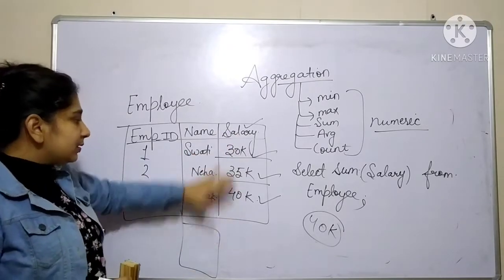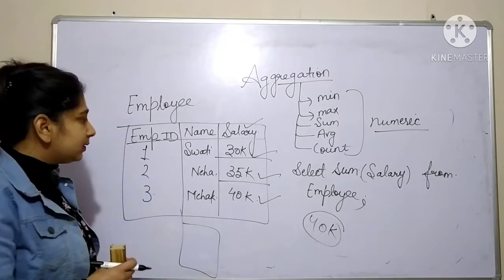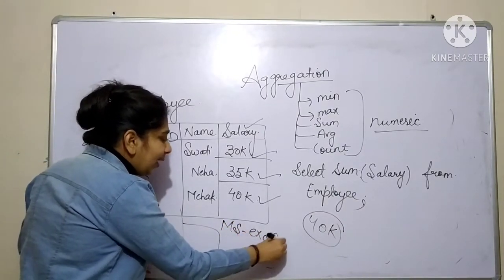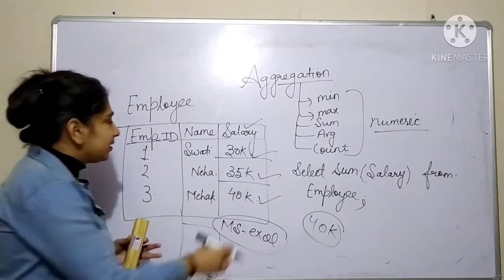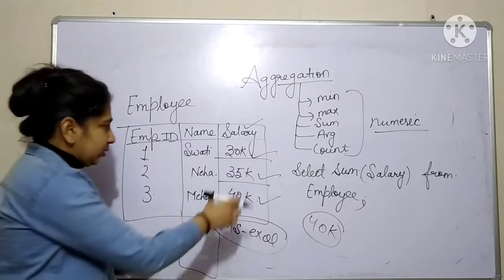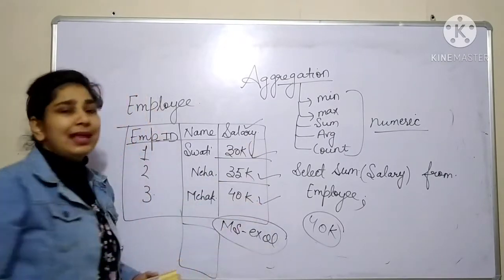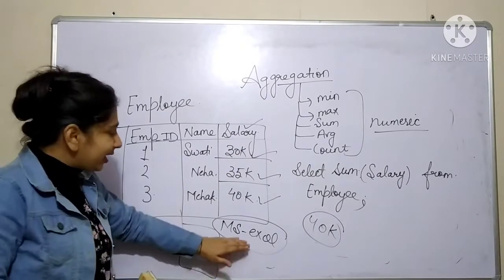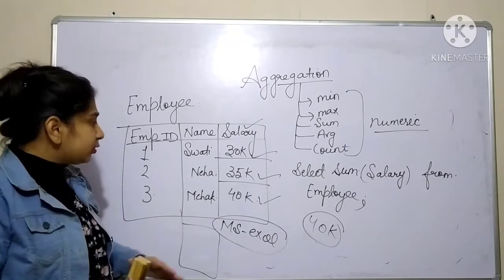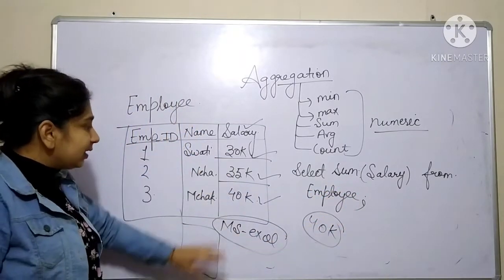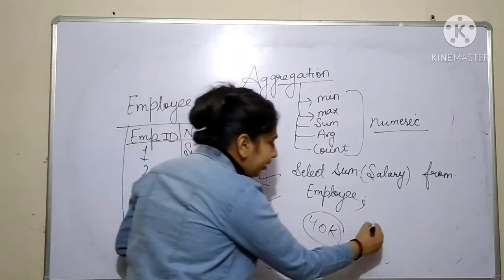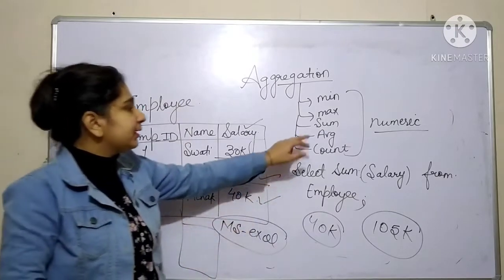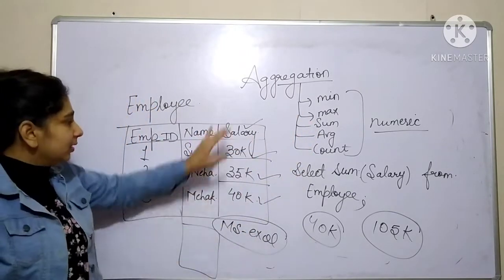We are going to sum all the values present in the salary column. Similar to MS Excel where you can perform a sum operation by selecting all fields, the output of SELECT SUM(salary) FROM employee will sum up 30,000 + 35,000 + 40,000, giving an output of 105,000.